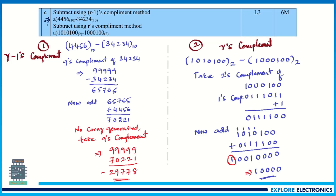The first complement subtraction question is: subtract 34234 (base 10) from 44566 (base 10) using the r−1's complement method. Since the radix of these numbers is 10, r equals 10, so r−1's complement means 9's complement. We need to take the 9's complement of the subtrahend.